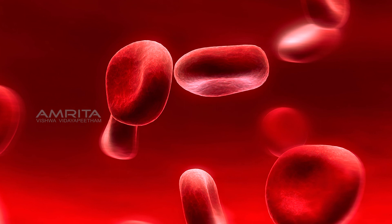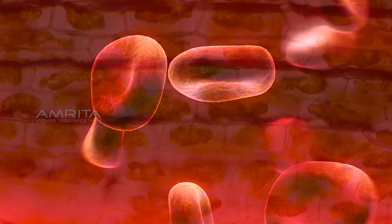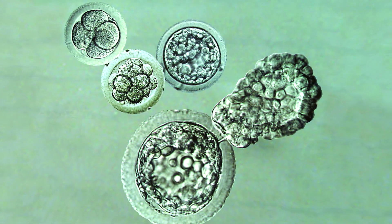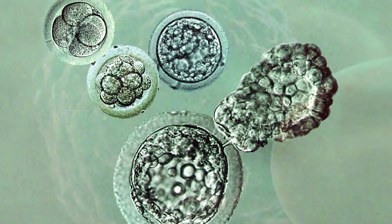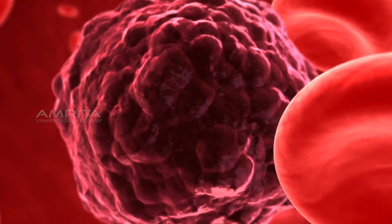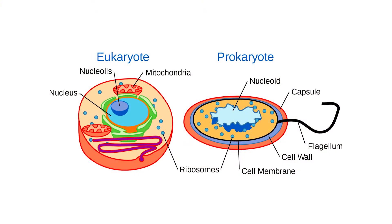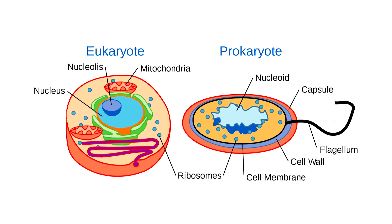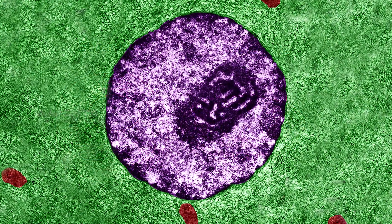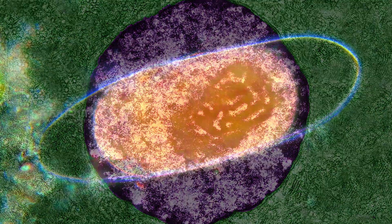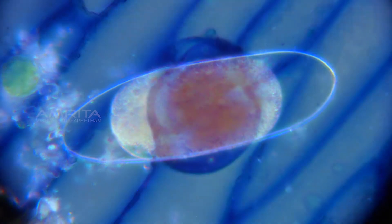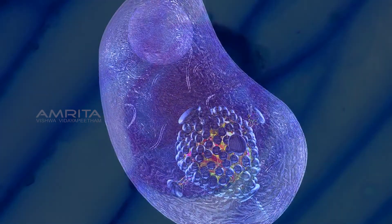Cells are the basic structural and functional units of every organism. All living cells can be classified into two distinct types: prokaryotic and eukaryotic cells. The word eukaryotic means 'true nucleus' and prokaryotic means 'before nucleus.'